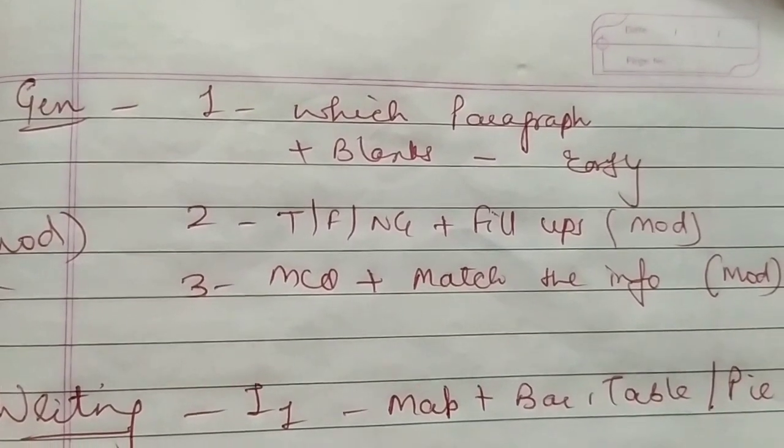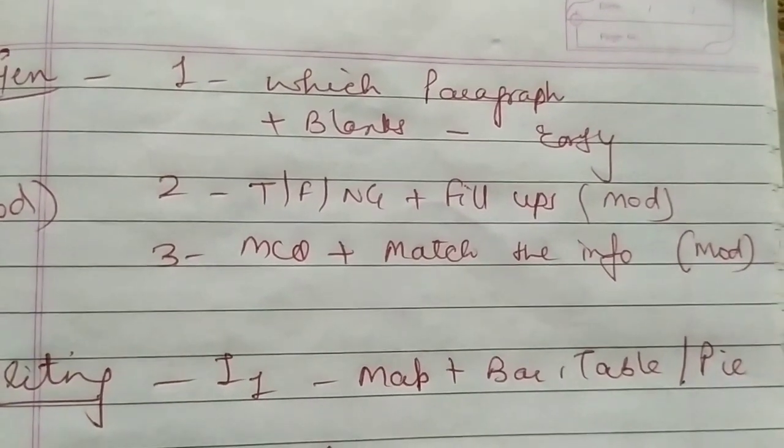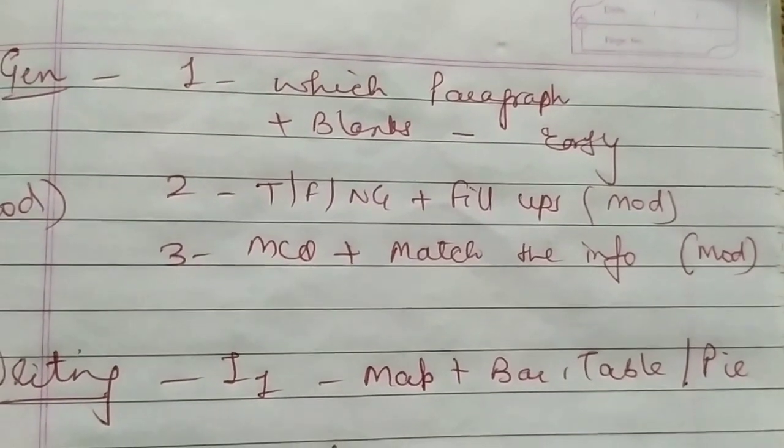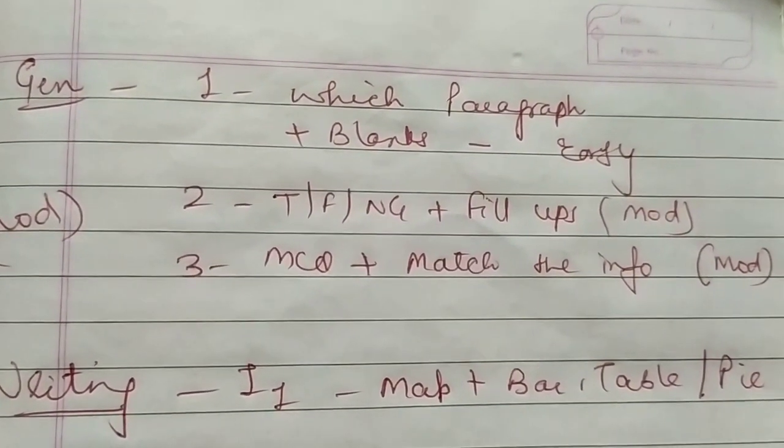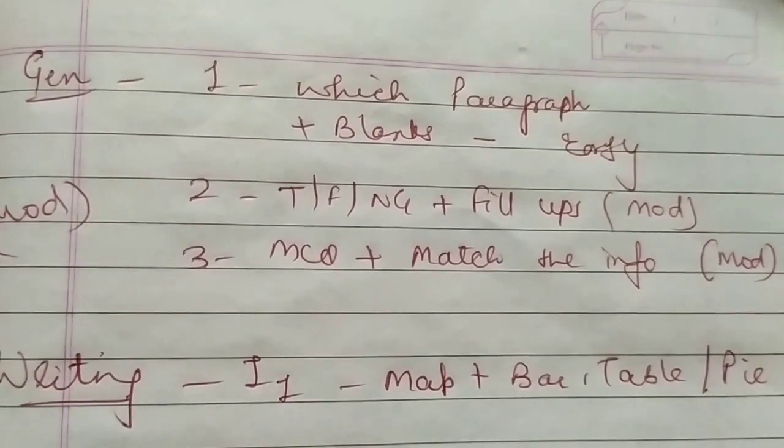For writing task one of academic, that will be map, bar, table, and pie. All the previous maps must be covered because maps are repeating. They are coming again and again. Listening is also repeating.